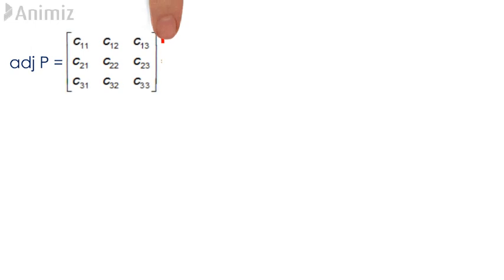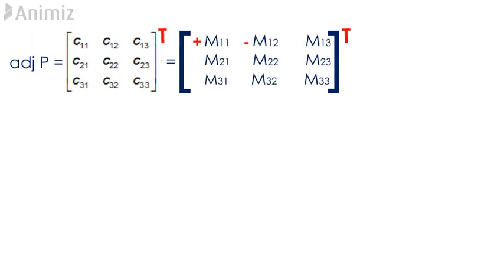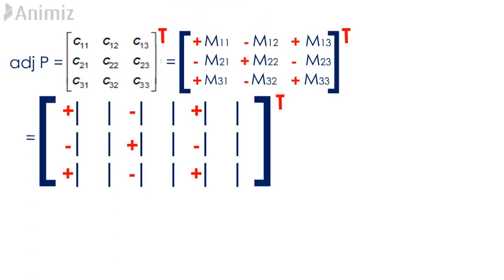We know that the adjoint matrix is the transpose of the cofactor matrix. So first of all, we look for the cofactor matrix of P. Insert the sign of cofactors: plus, minus, plus; minus, plus, minus; plus, minus, plus — and leave space for the determinant of the elements left after blocking the particular row and column.